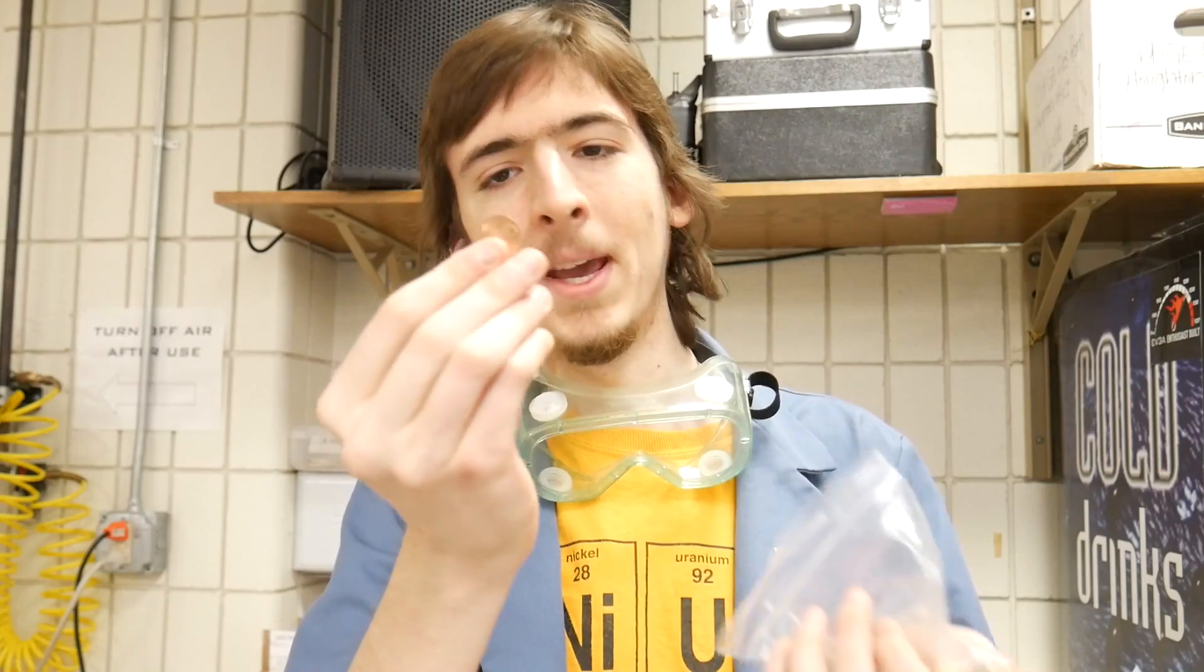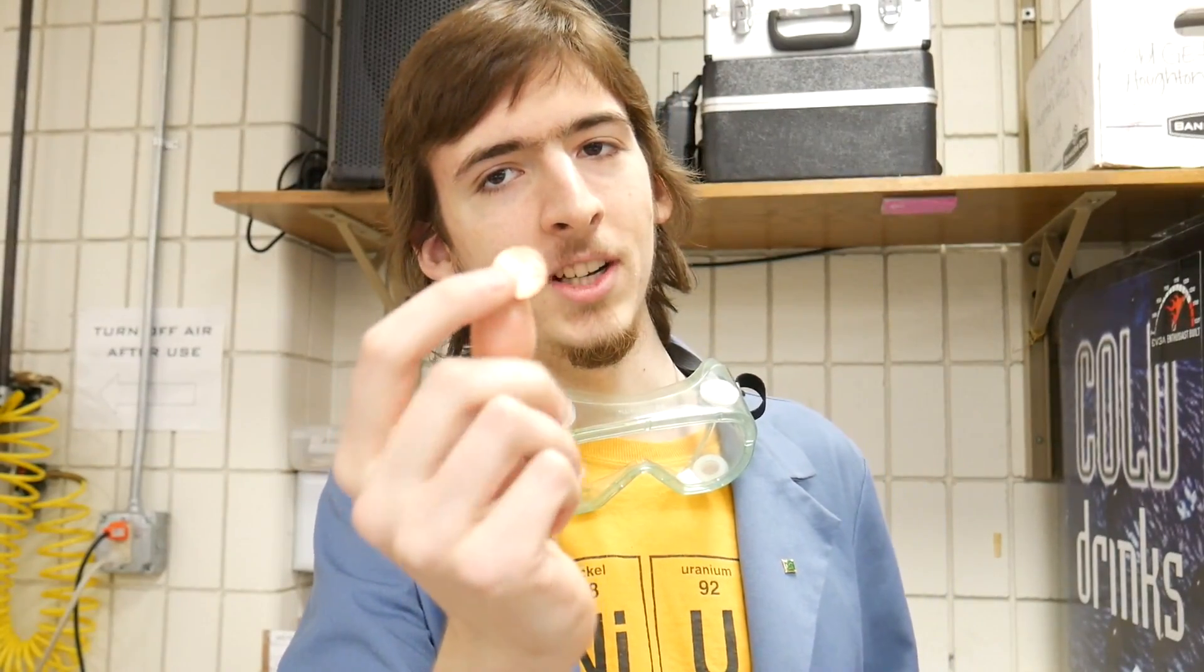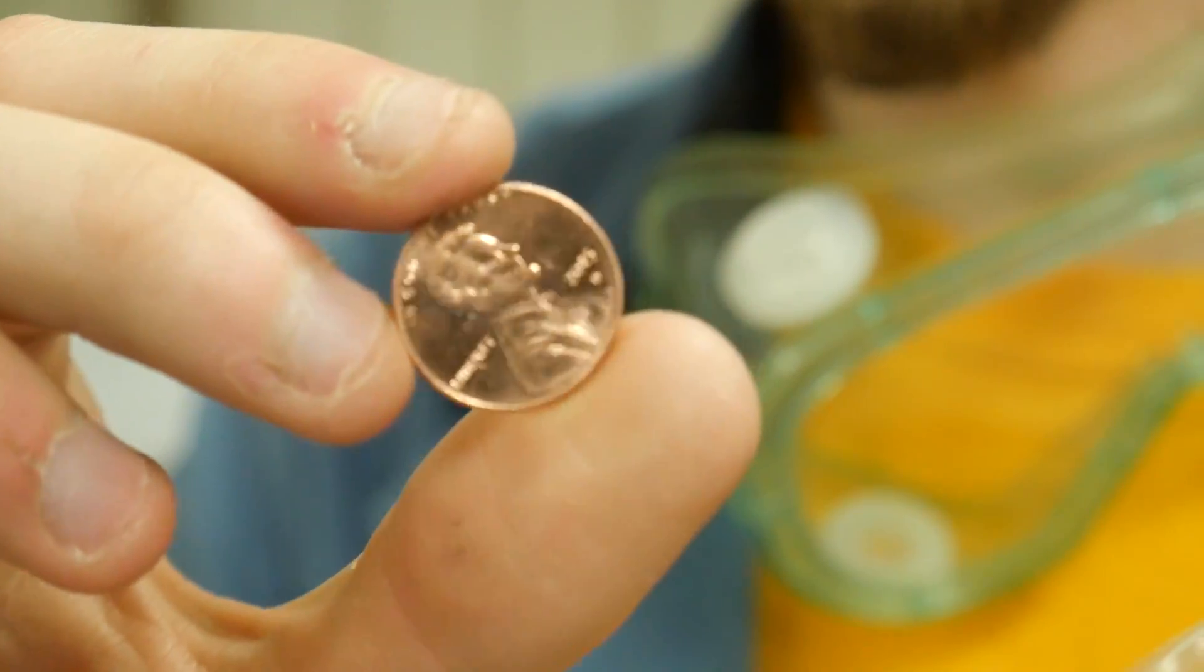Zinc is pretty easy to come by. You can take any old US penny. Although the outside is coated in copper, the inside is entirely zinc. A shrewd haggler like myself was able to get 100 pennies for only a dollar.